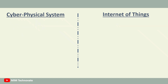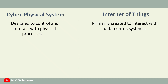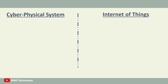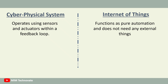Cyber-physical systems devices are designed to control and interact with physical processes, whereas Internet of Things devices are primarily created to interact with data-centric systems. Cyber-physical systems operate using sensors and actuators within a feedback loop, while Internet of Things functions as pure automation and does not need any external things.